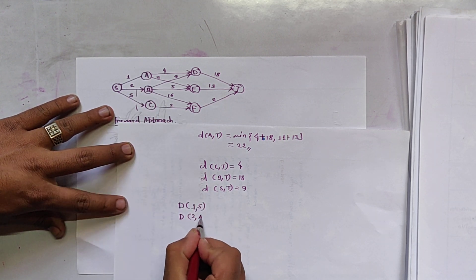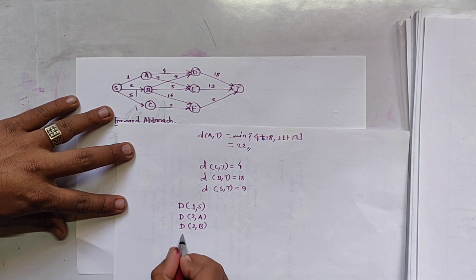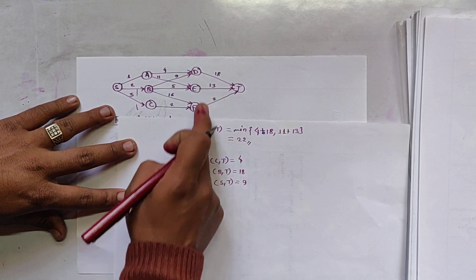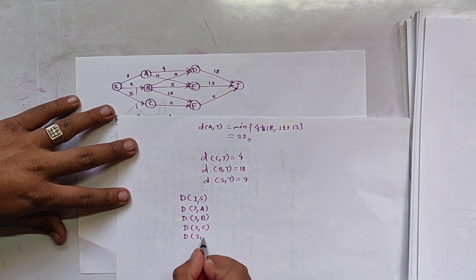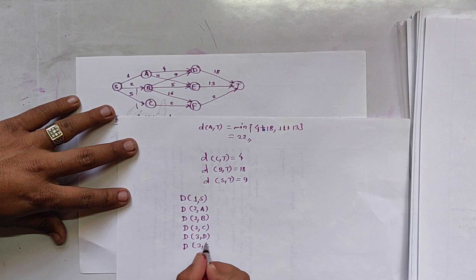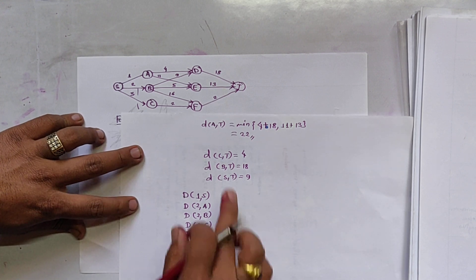In second stage, there is B also. In second stage, there is C also. And in third stage, there are three vertices, D, E and F. So in third stage, there is D, E, and F. In fourth stage, there is T.